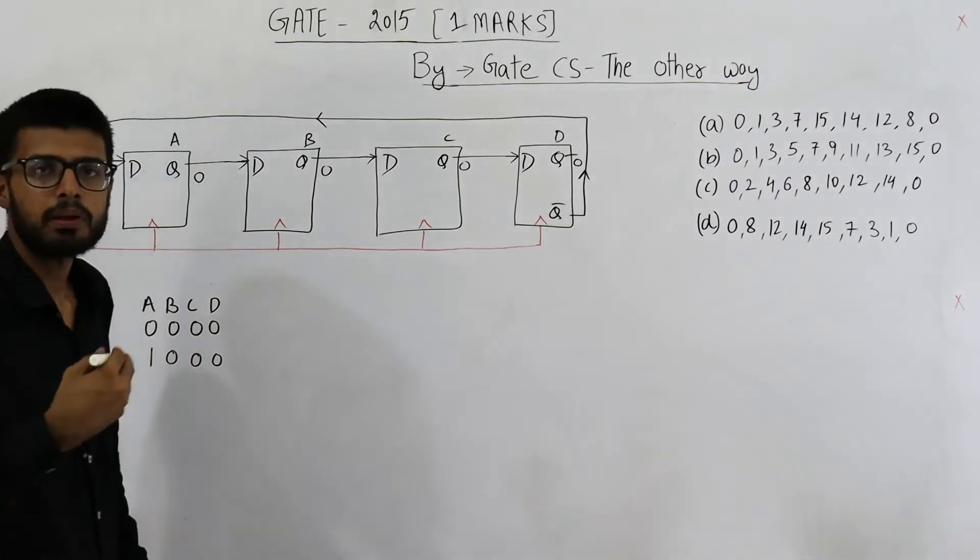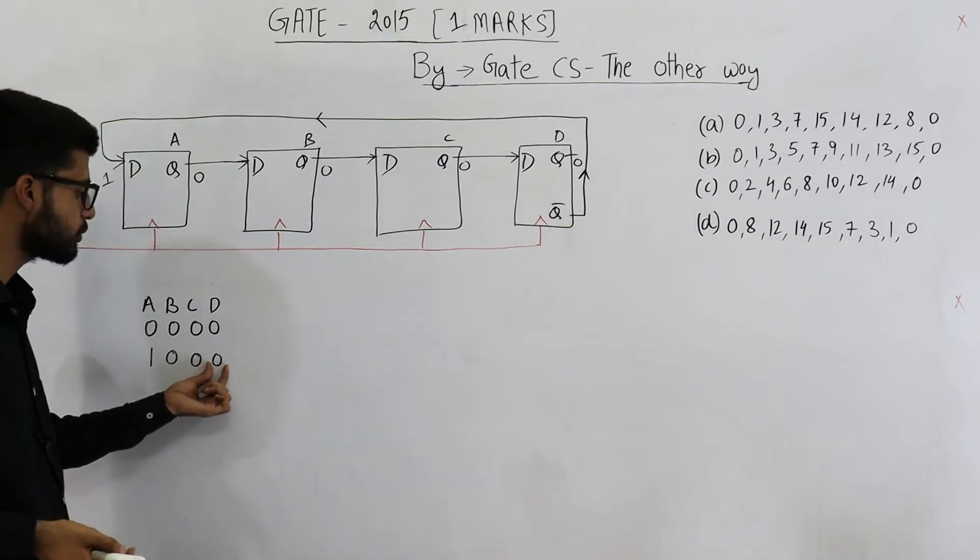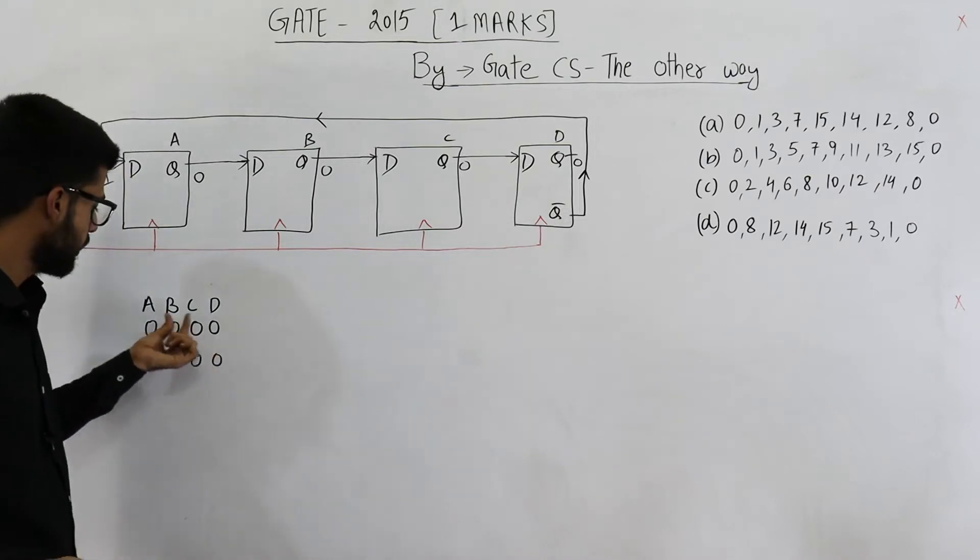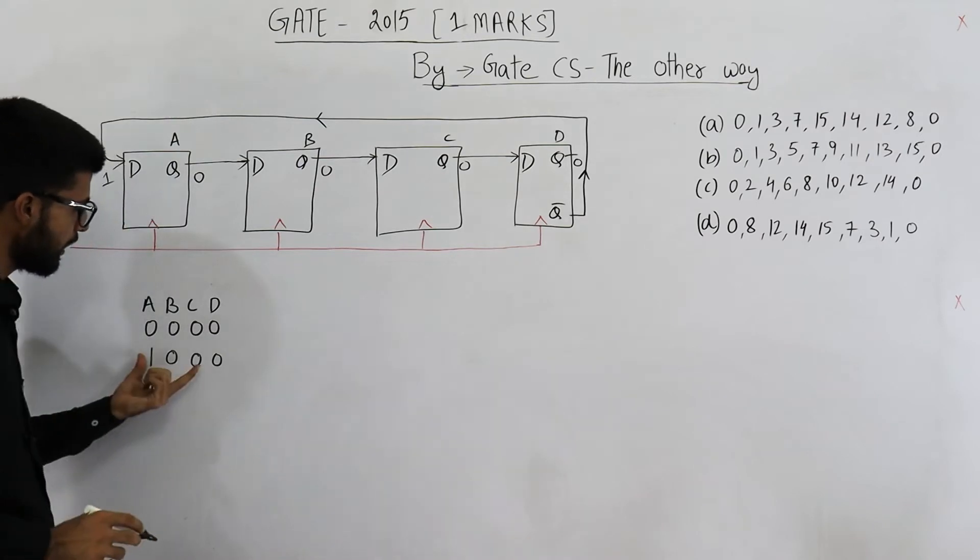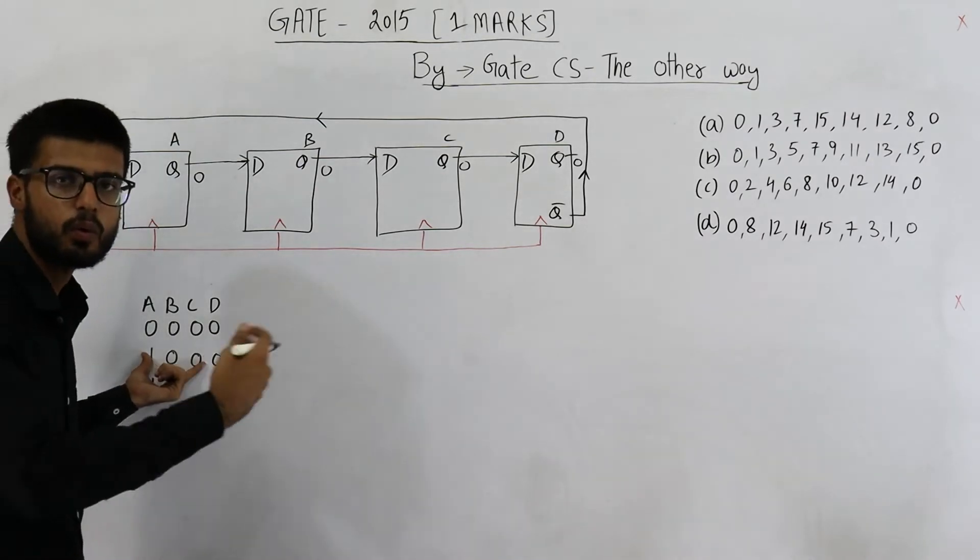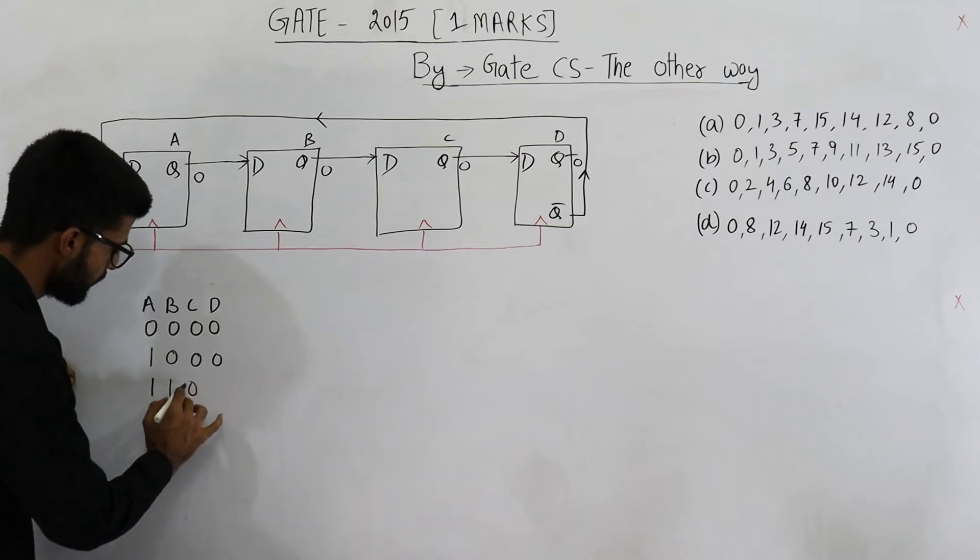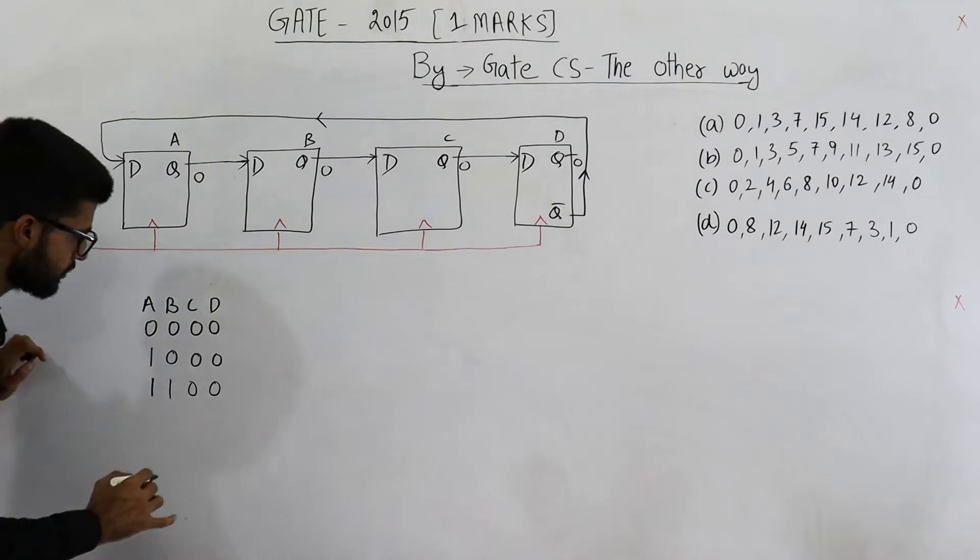Now let us see what will happen upon giving next clock signal. Whatever is this bit's complement, it is 0, its complement is 1. That will come to the first place. So I am writing 1 here. And these 3 will shift 1 position to the right. So 1, 0, 0 is copied as it is.